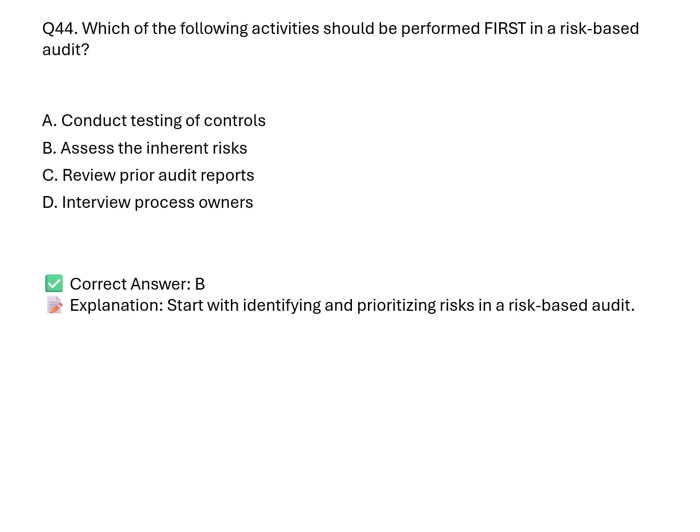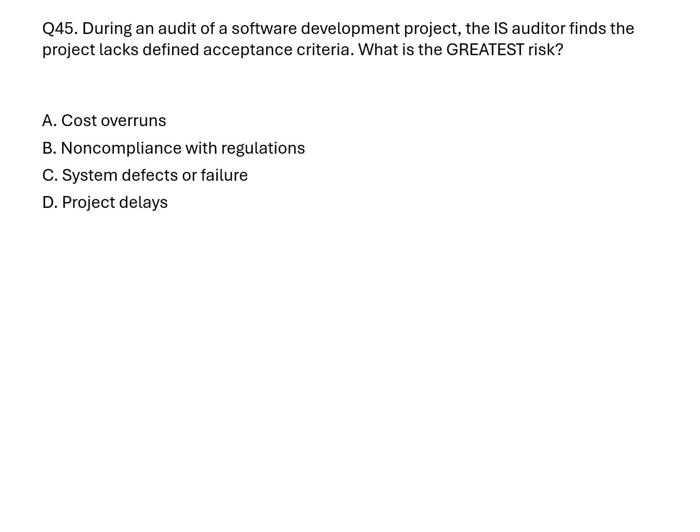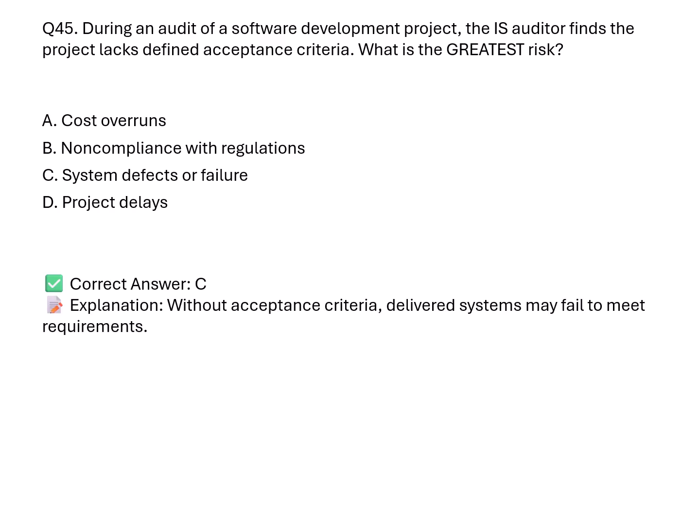Question 45. A software development project lacks defined acceptance criteria. What's the greatest risk? A. Cost overruns. B. Noncompliance. C. System defects or failure. D. Project delays. Correct answer: C. Explanation: Without acceptance criteria, there's no way to ensure the system meets business requirements, increasing the risk of failure.